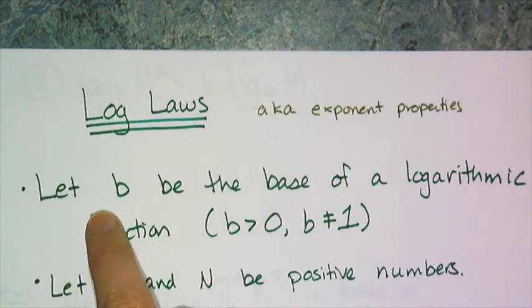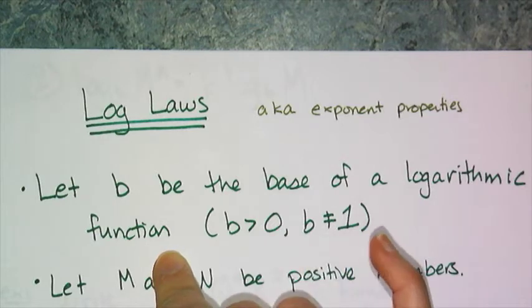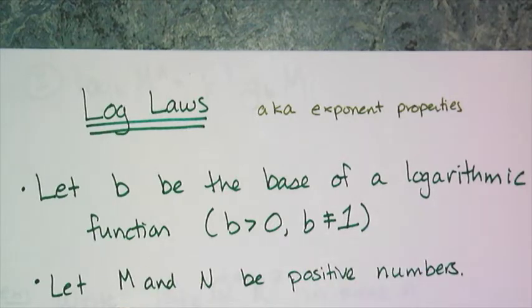We're going to let b be the base of a logarithmic function where b is greater than 0 and b is not equal to 1. And then we're going to let m and n be positive numbers.